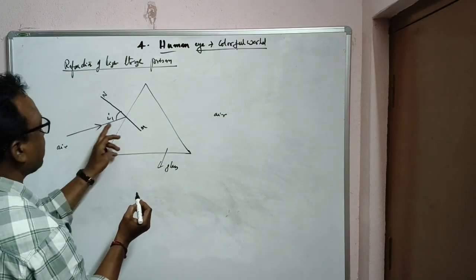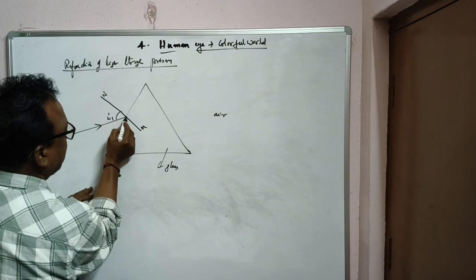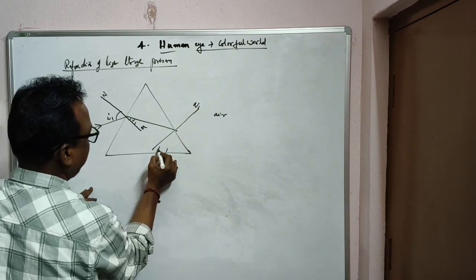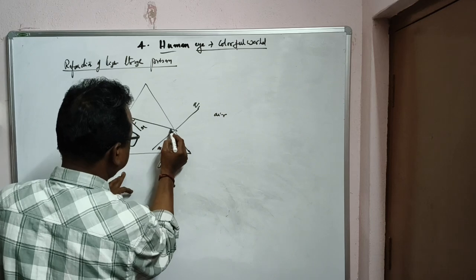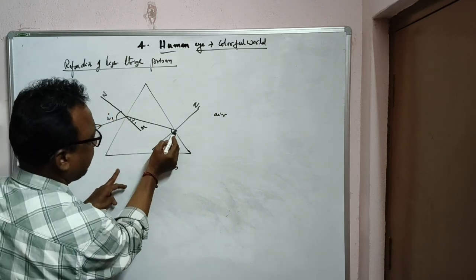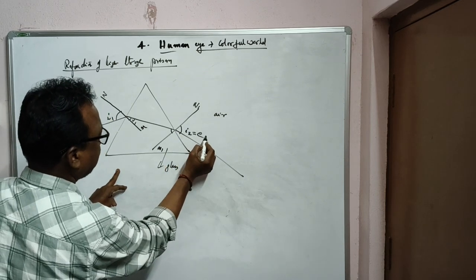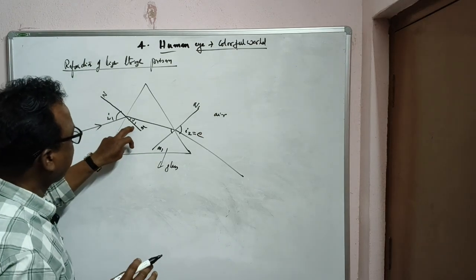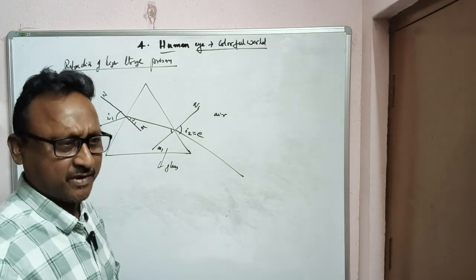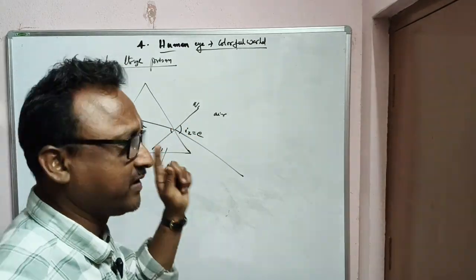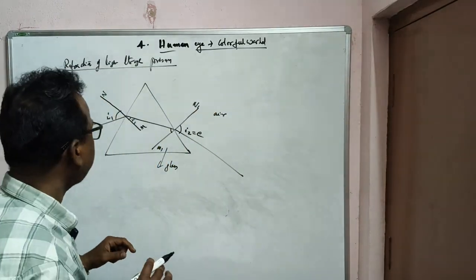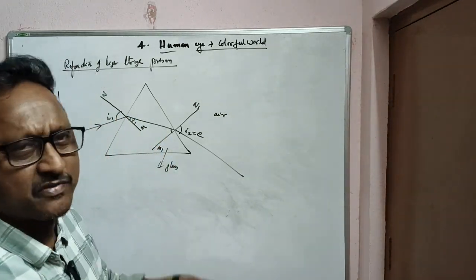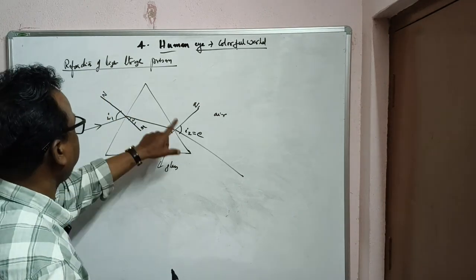When light exits from denser to rarer medium at the second surface, it deviates away from the normal. The emergent angle is i2. The refractive index of air is approximately 1 and glass is generally 3/2. You can calculate prism values using Snell's law as discussed in the light chapter.